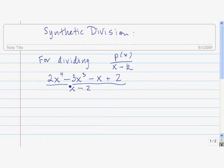So let's divide 2x to the fourth minus 3x cubed minus x plus 2 by x minus 2. What we do is we take this number after the minus sign and we put it here and put this kind of little partial box beside it.